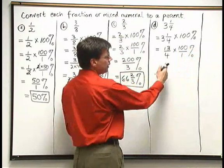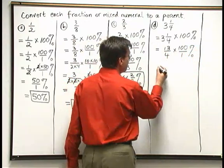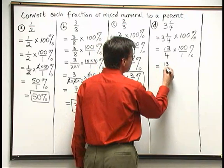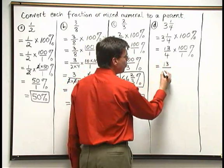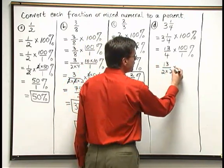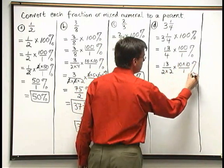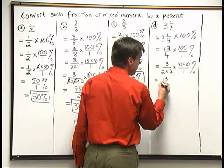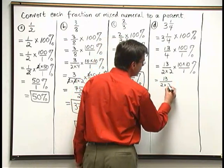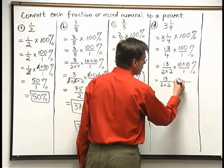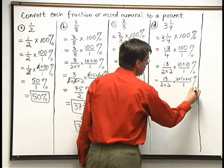And when I think about canceling now, I can do some canceling with 4 and 100. Here I'll just take my time about it all. So 13 over 4. 4 is 2 times 2 times 100 is 10 times 10 over 1 percent. That's 13. 13 is prime. I can't break it down further. Over 2 times 2. I'm down to 2 times 5 times 2 times 5 over 1 percent.